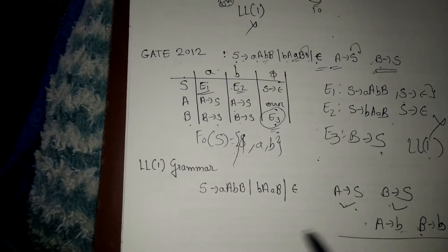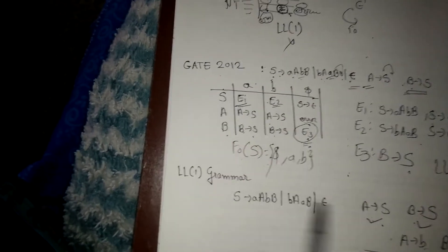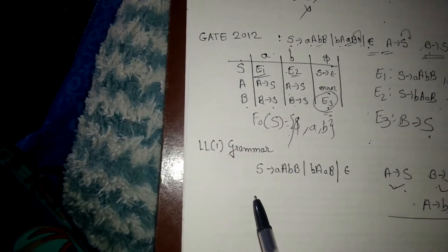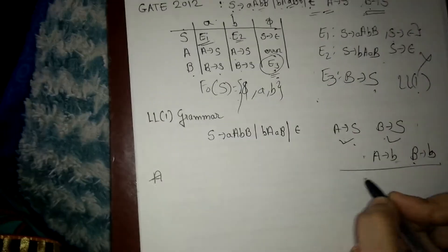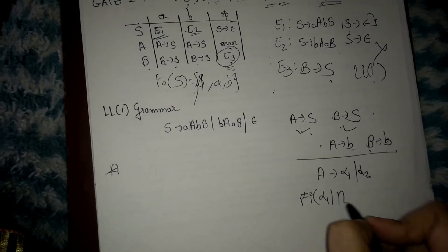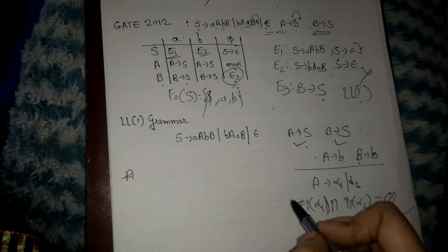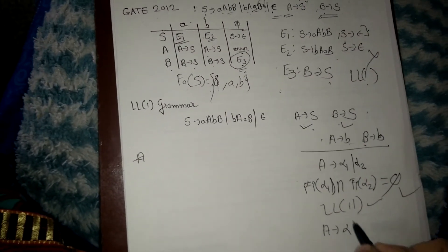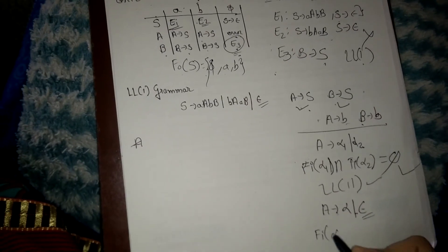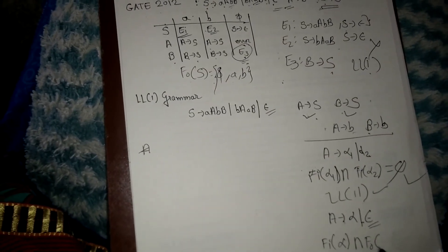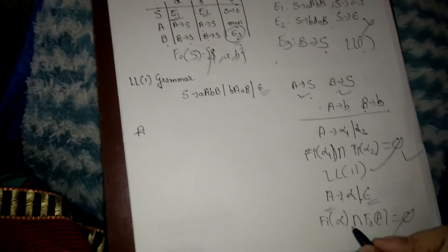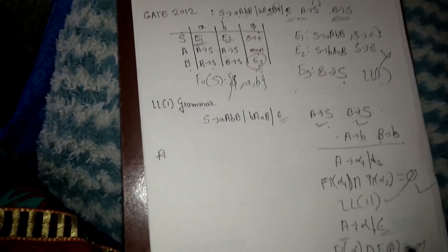The second rule says that if the grammar has no epsilon production, for a production of the form A → α1 | α2, then FIRST(α1) ∩ FIRST(α2) should equal φ. If it does, the grammar is LL(1). The third rule applies when there is an epsilon production: FIRST(α) ∩ FOLLOW(A) should equal φ. Only then can we say the grammar is LL(1).